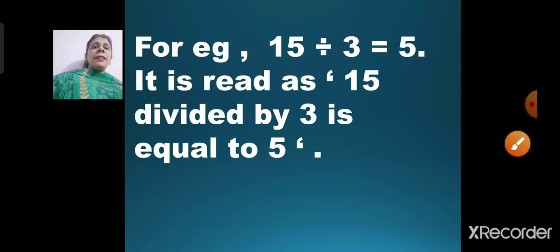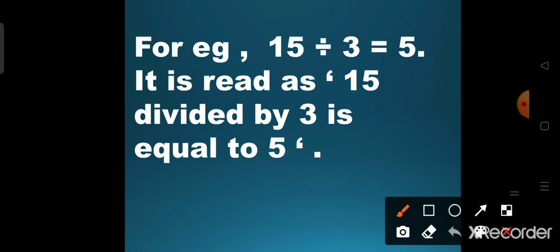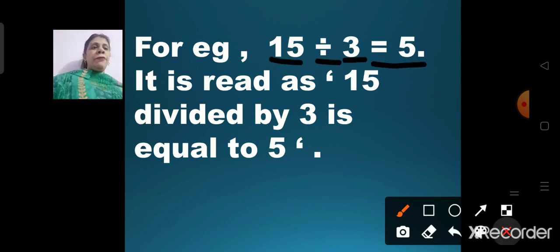For example, on the screen you can see it is written 15, then the division sign, and it is written 3 equal to number 5. How do you read it? It is read as: 15 divided by 3 is equal to 5.